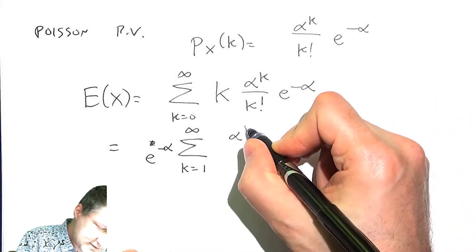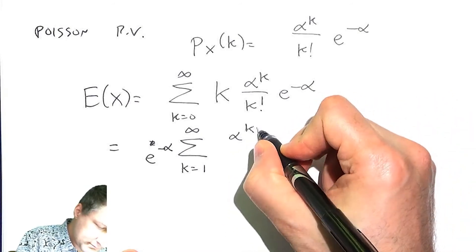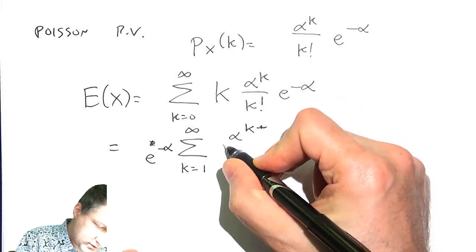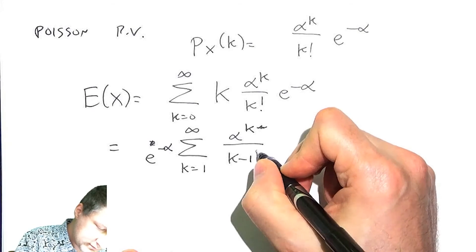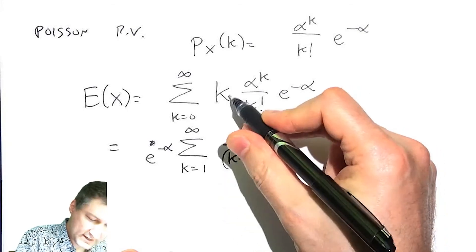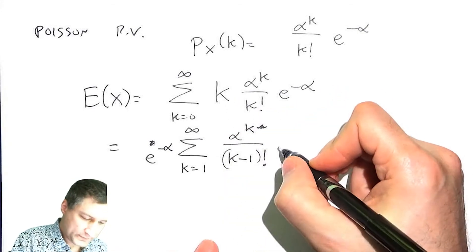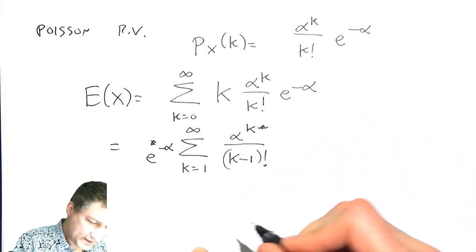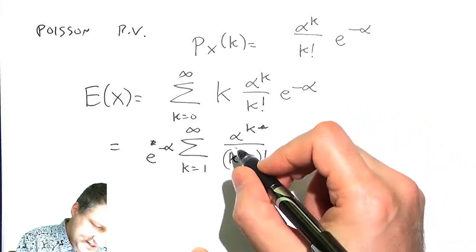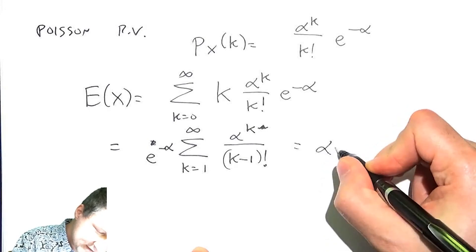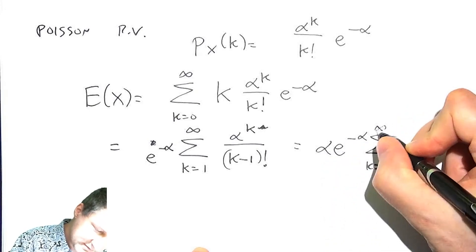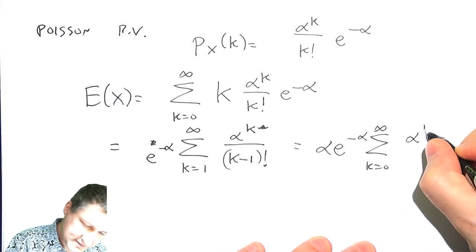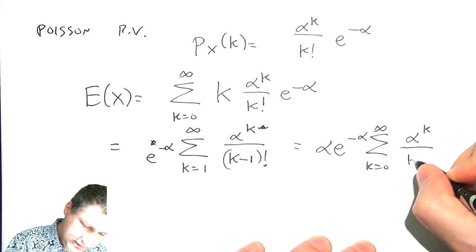And then what do I have? I have alpha to the k over k minus 1 factorial, because the k here cancels out with this k. And now what is this sum here? Well, I'm actually going to take out another alpha. I'm going to say this is alpha e to the minus alpha, this sum, and I'm going to make this sum again from k equals 0 like this. So I have alpha to the k over k factorial.